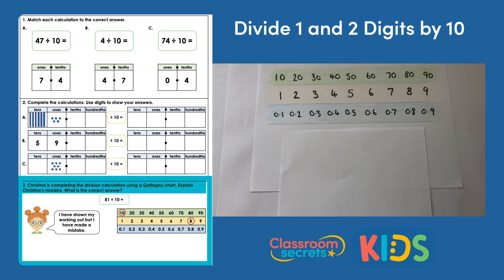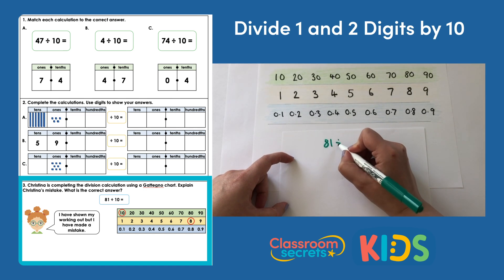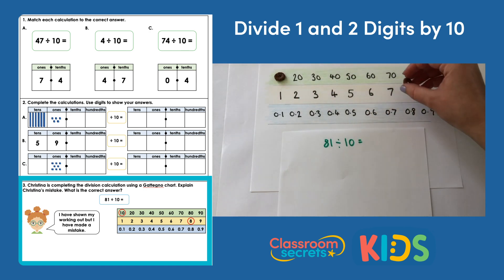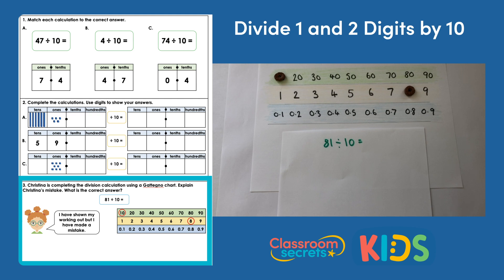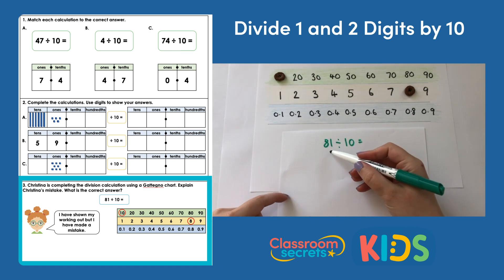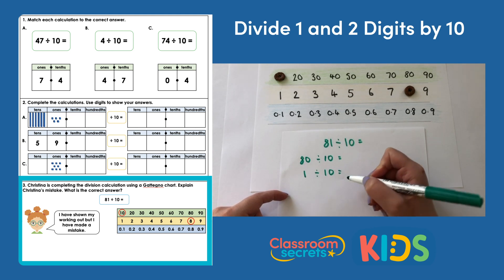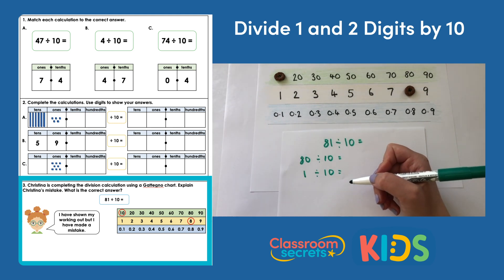Question 3: Christina is completing the division calculation using a Gatenyo chart. Explain Christina's mistake and find the correct answer. I've drawn a Gatenyo chart here so we can have a look together. The calculation Christina was doing was 81 divided by 10. Christina says she has shown her working but made a mistake. I'm going to place a counter over 10 and a counter over 8 to replicate what Christina has. We can use the Gatenyo chart by partitioning: 81 is made of 80 and 1, and we divide each by 10.